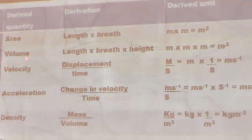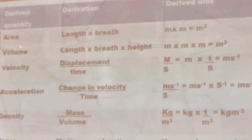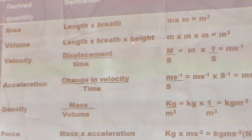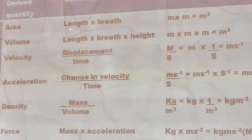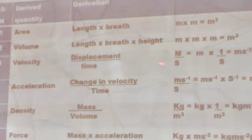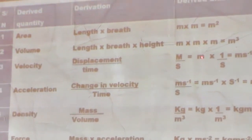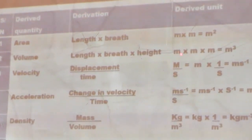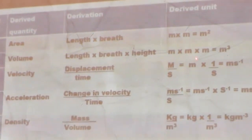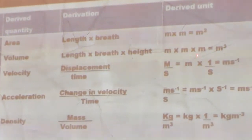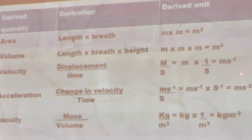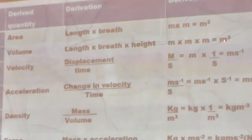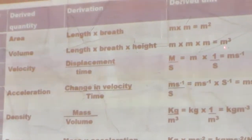The next derived quantity is volume. Volume is derived as length multiplied by breadth multiplied by height. The unit of length is meter (m), breadth is meter (m), and height is also meter (m). When m × m × m, you have m raised to power 3, that is m cubed. Therefore the unit of volume is meter cube.